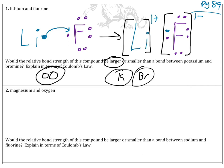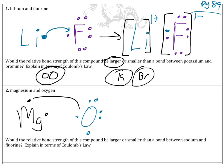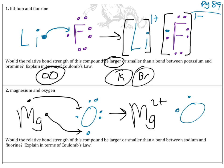For the next one, we have magnesium with two valence electrons and oxygen with six valence electrons. Both electrons from magnesium will transfer over to oxygen. We end up with magnesium as a two plus — alone without its valence electrons — and oxygen becomes a two minus because it gained those electrons. Opposites attract and they come together; electrons are transferred.